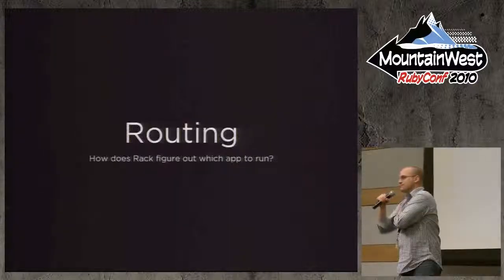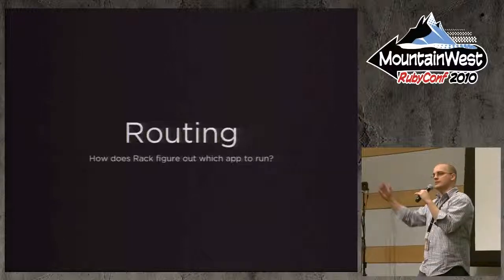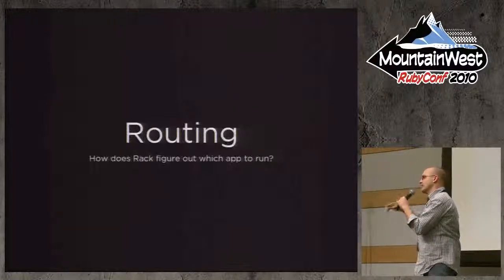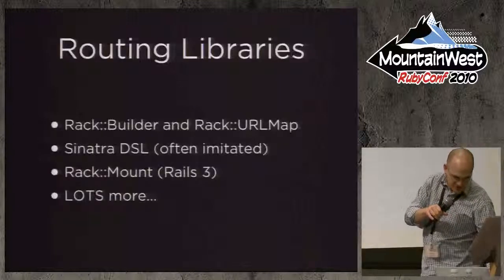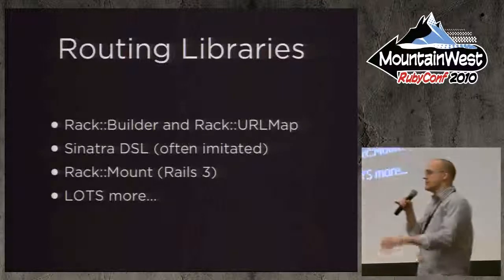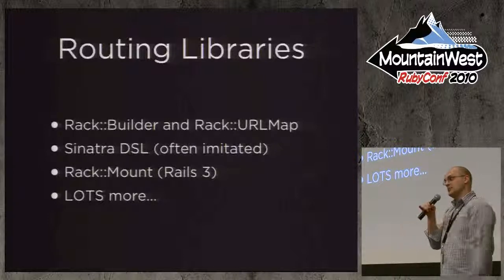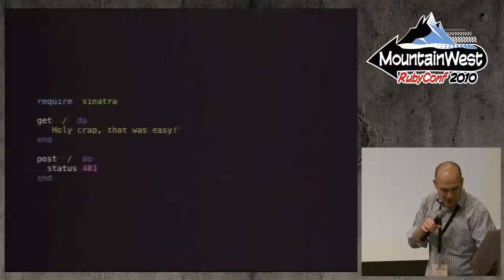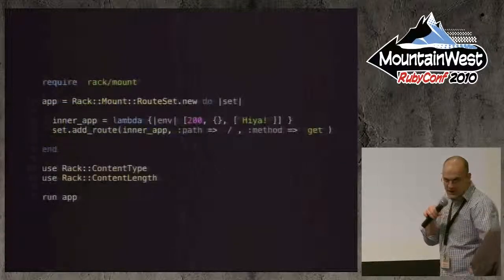Routing: you can mount all kinds of different apps at all kinds of different places. I can mount an app on the root so when somebody requests the root of my website, some app runs. When somebody requests slash downloads, a different app runs — maybe a file server. Sinatra's DSL is kind of the one that's often imitated, never equaled. People are always trying to imitate the Sinatra DSL. Rack Mount is another option.